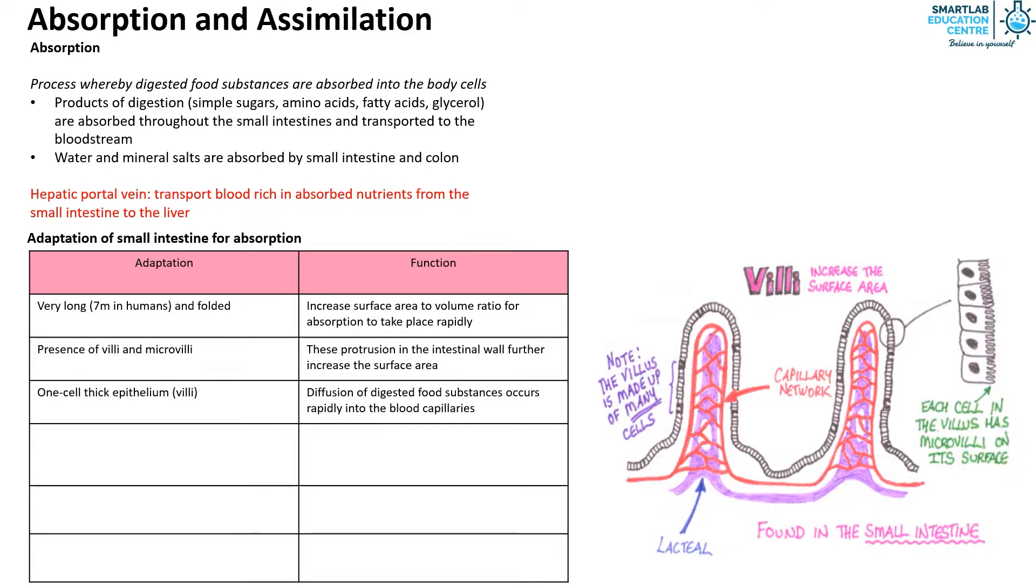The intestinal wall and villi are richly supplied with blood vessels so as to transport sugars and amino acids away from the small intestine. As food substances are transported away, a concentration gradient is maintained to facilitate diffusion.